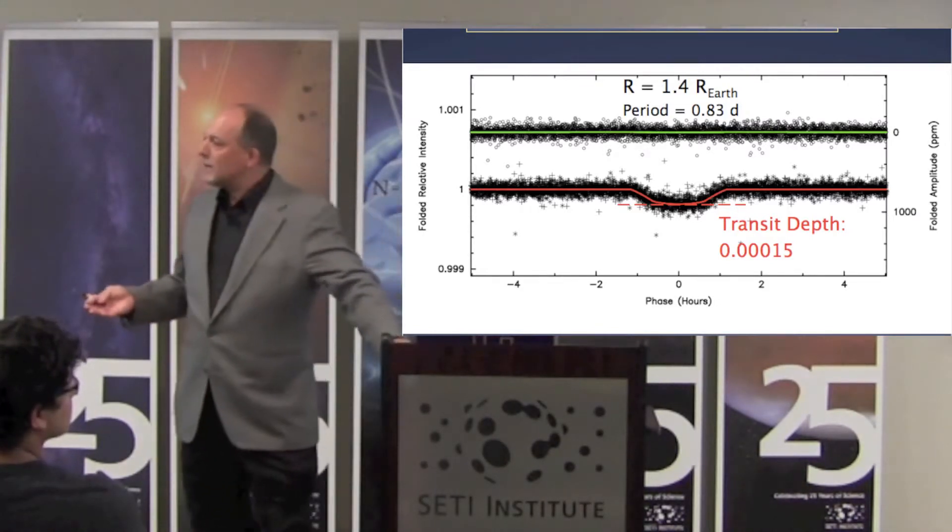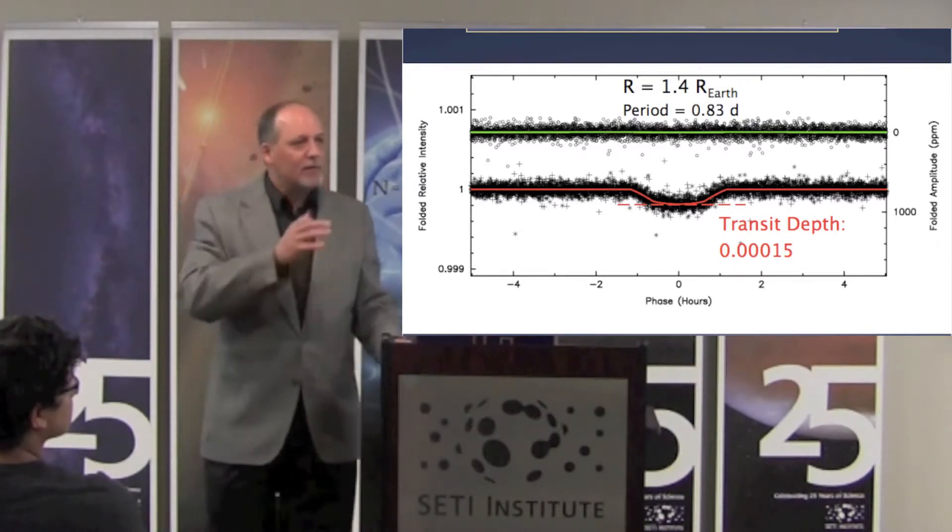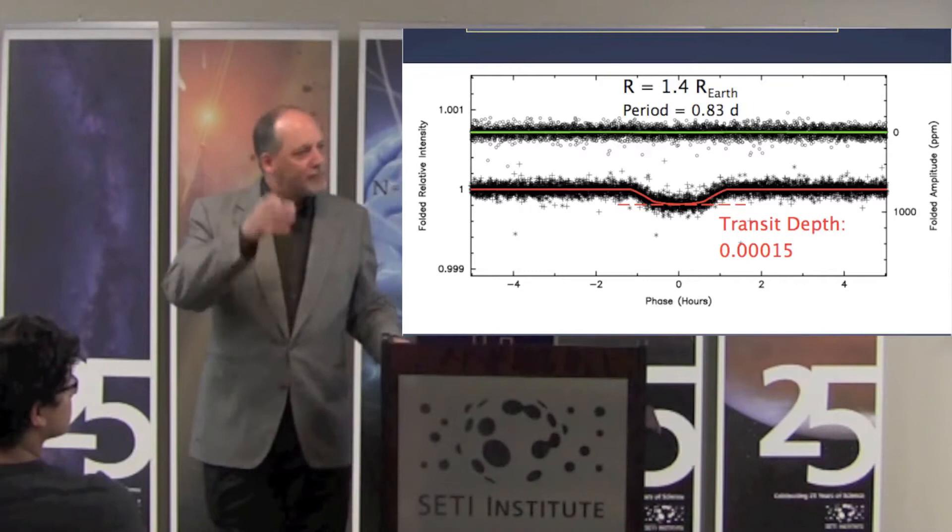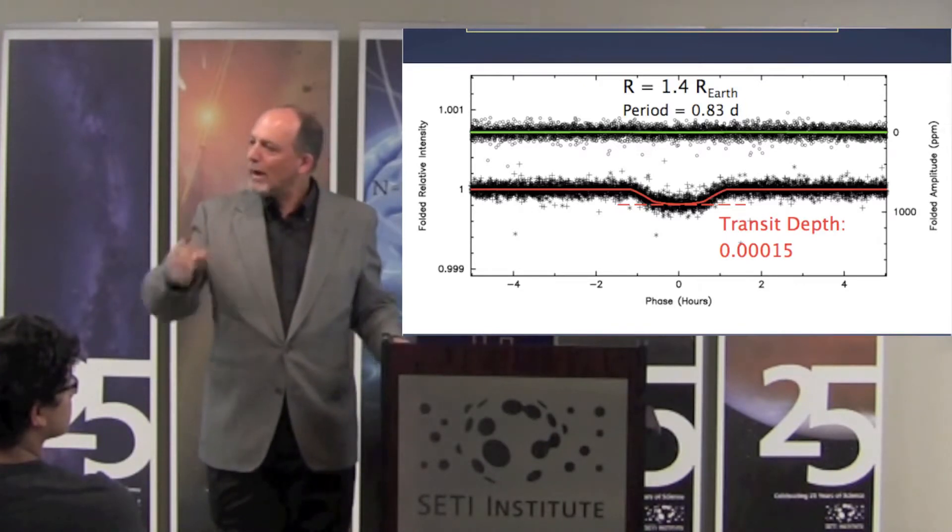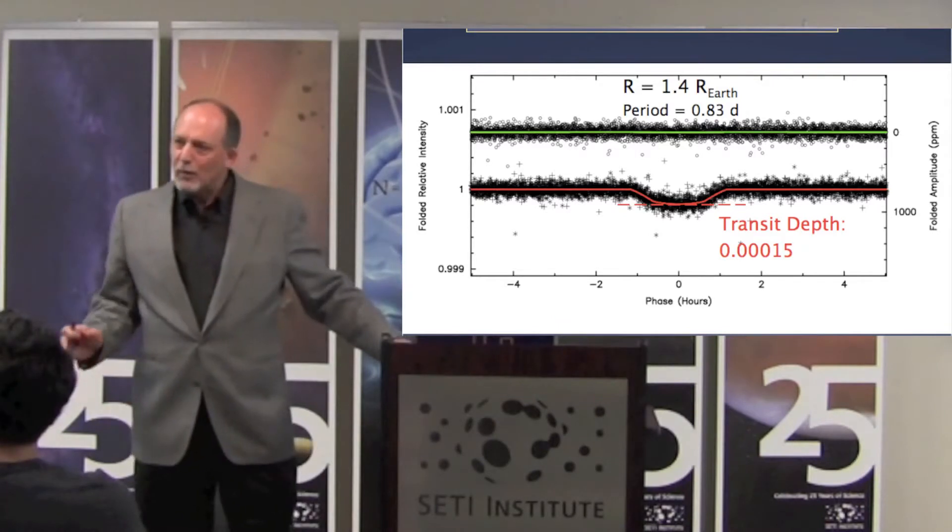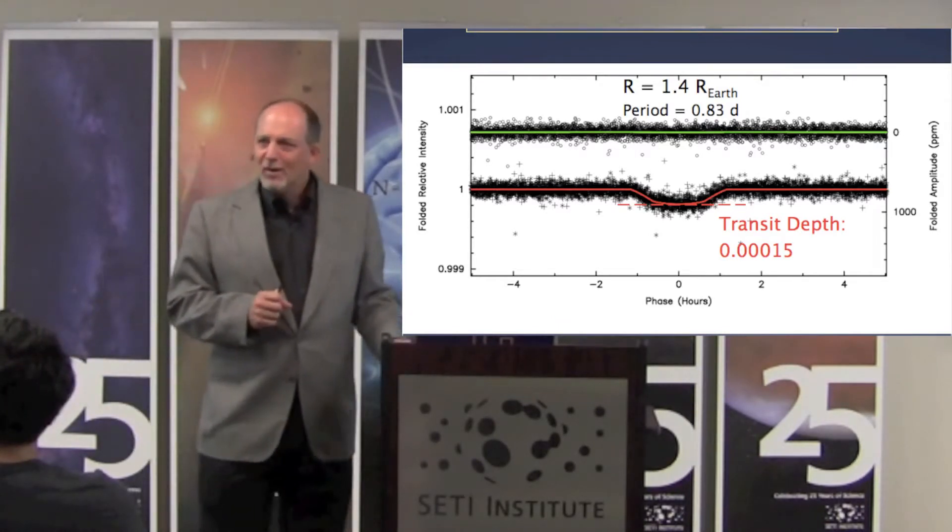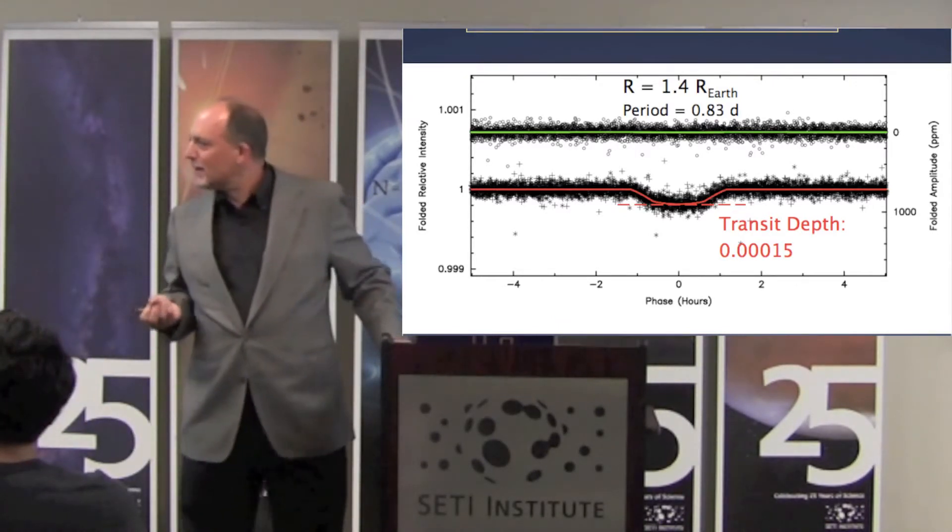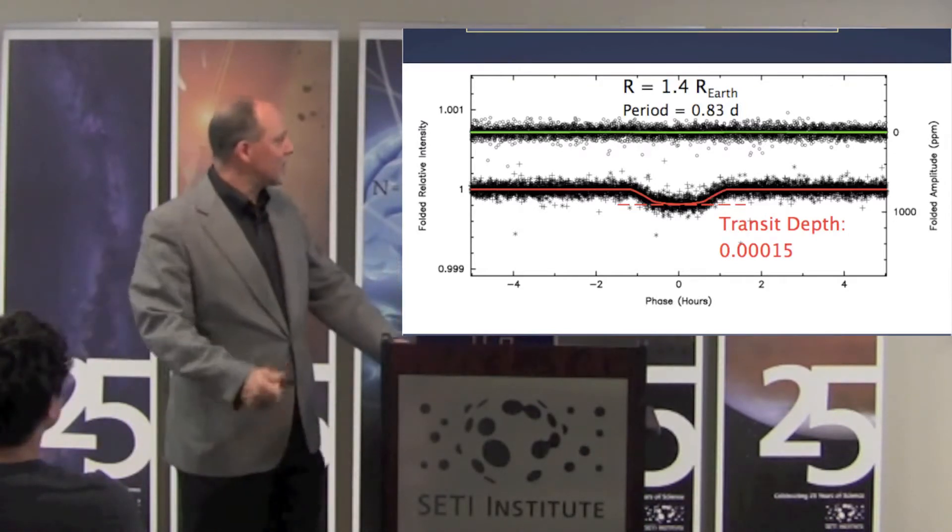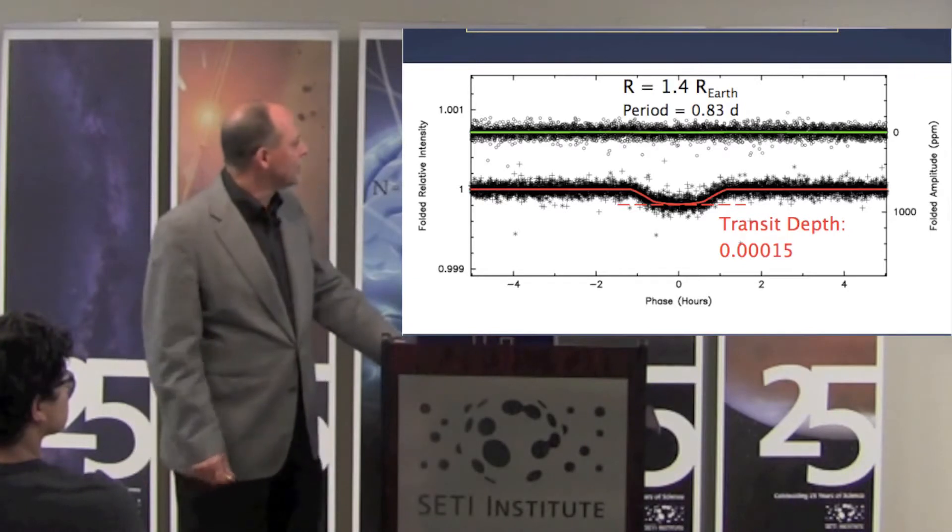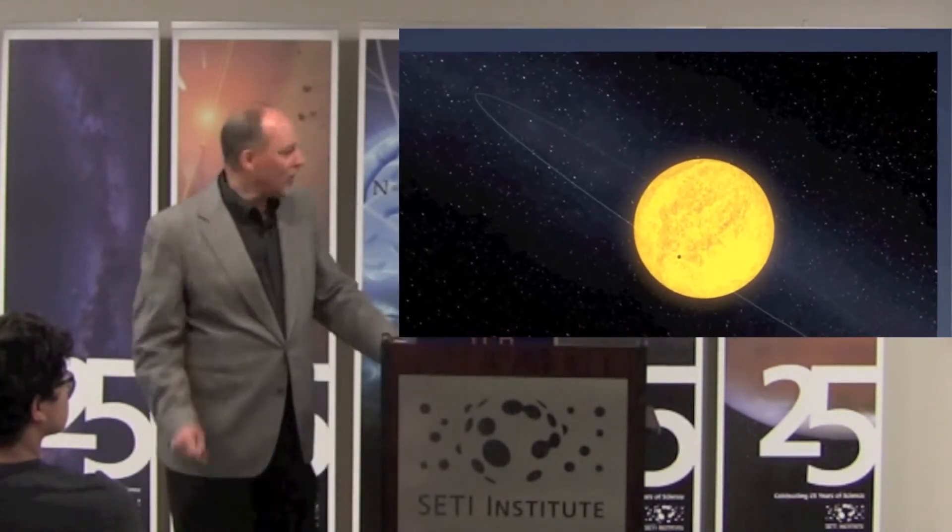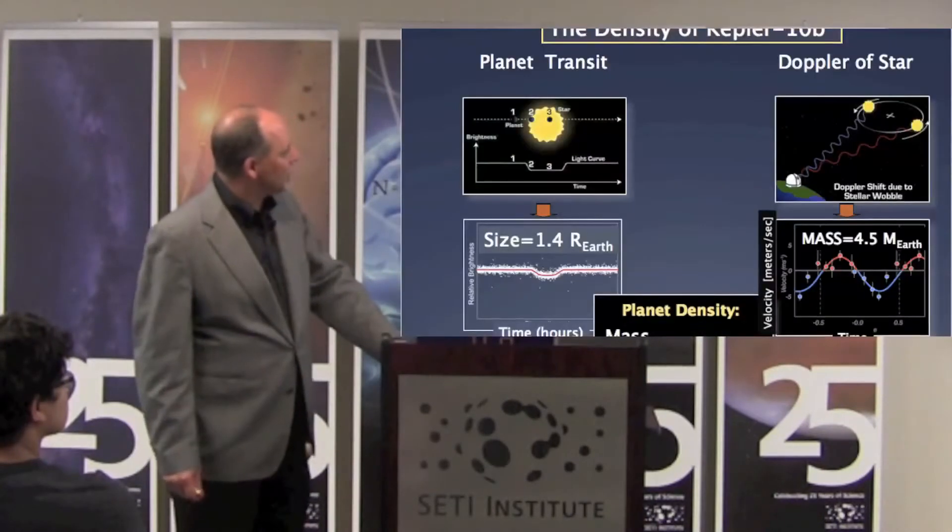And by the way, that is the world's record. This is the smallest planet ever found, still to this day, validated and confirmed around another sun-like star. It's not exactly the size of the Earth, but it is obviously tantalizingly close to a planet that has nearly the same size as our own planet Earth. That's amazing in and of itself, but there's more.